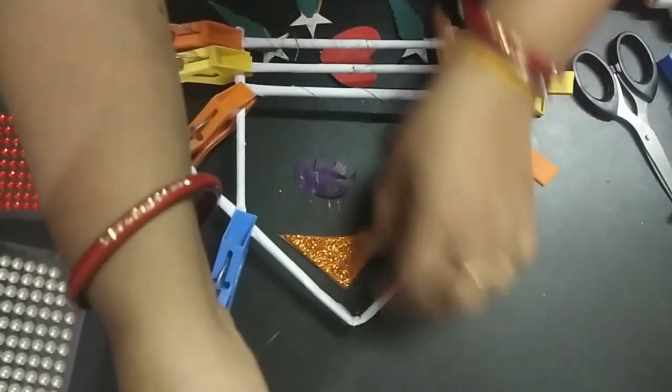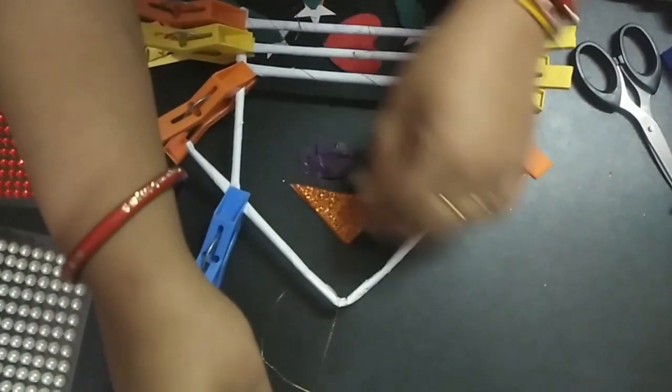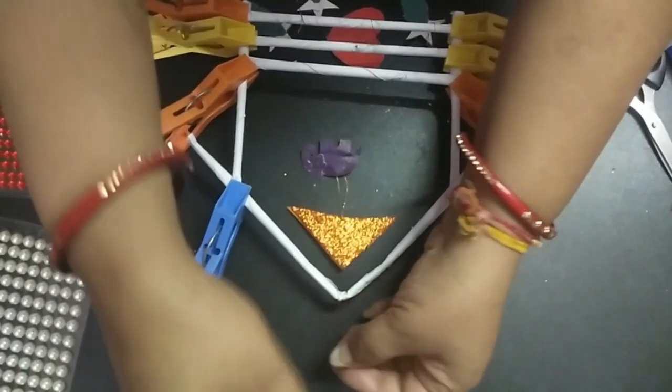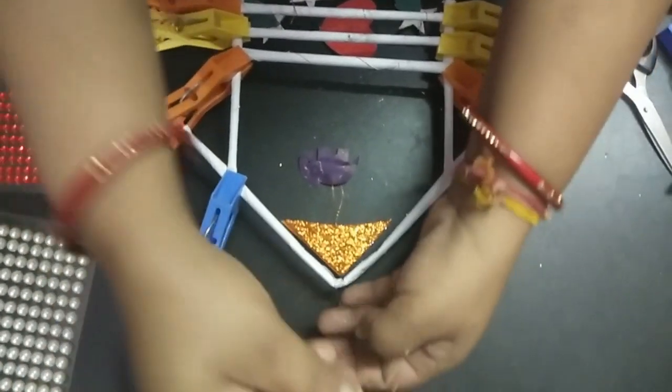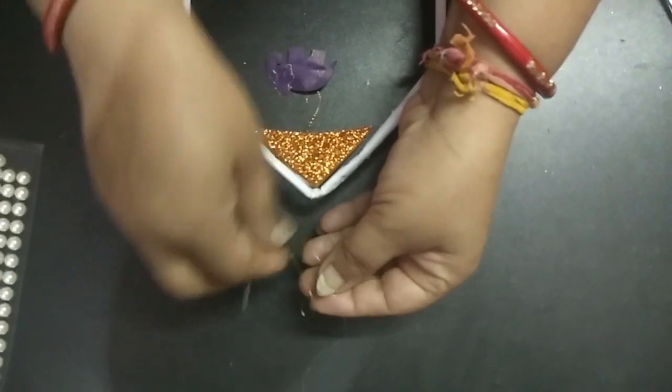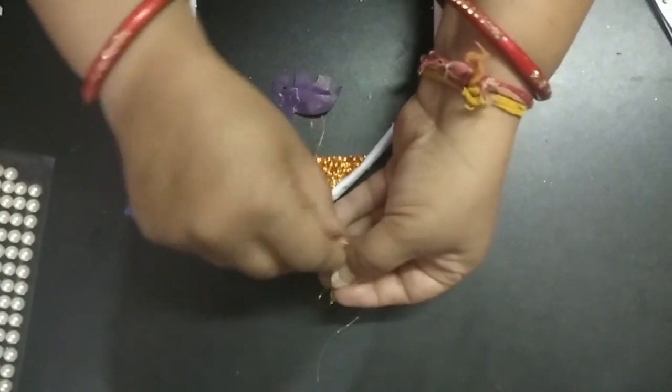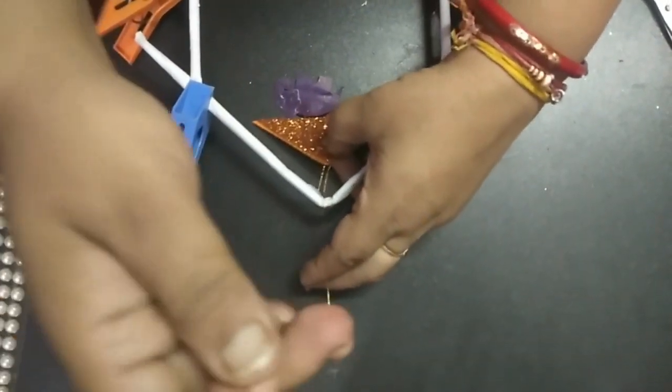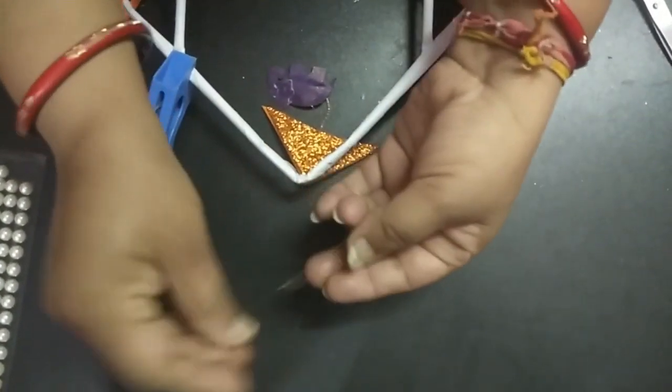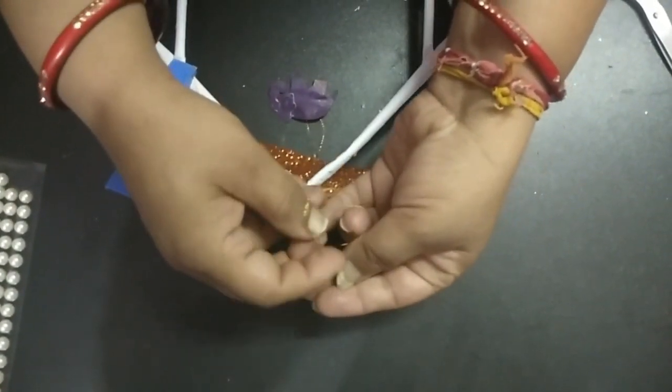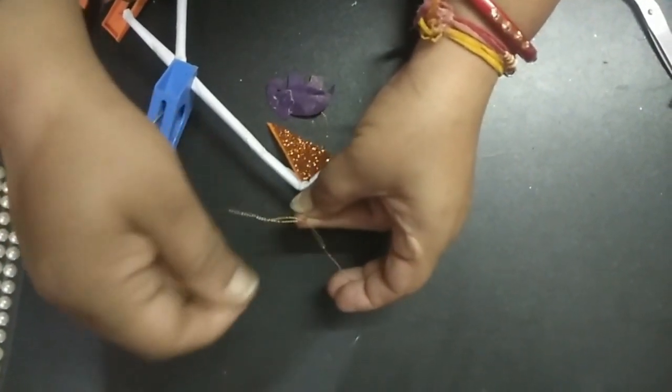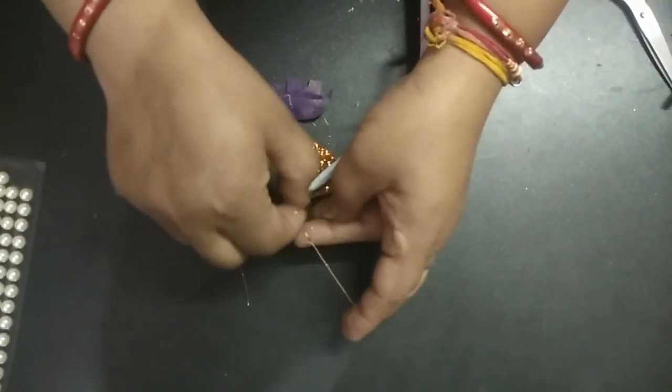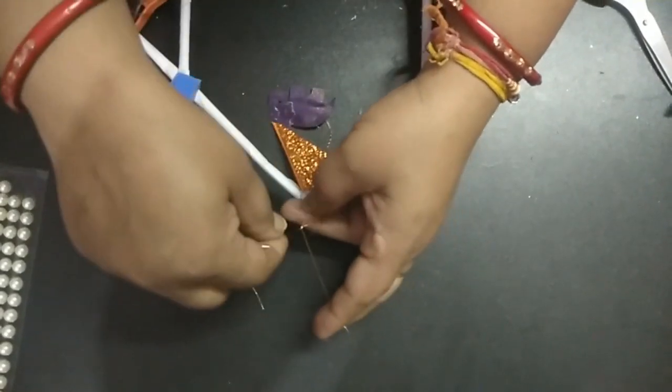So with the help of the needle, you can hang all the hangings together, and then you can tie a knot here. Make sure that this is a double knot so that it will not open. Okay children, and now the final task: